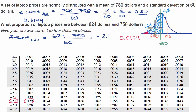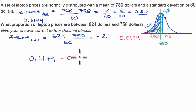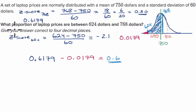To find the proportion between the two values, we subtract the red area from the entire proportion less than $768: 0.6179 minus 0.0179 equals 0.6000. To four decimal places, the answer is 0.6000 — or exactly 60% of laptop prices fall between $624 and $768.